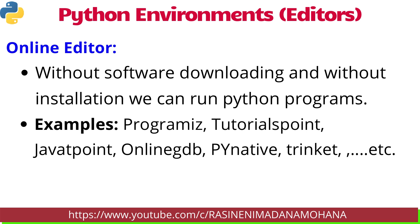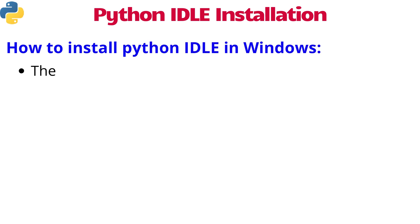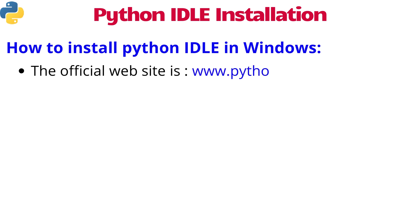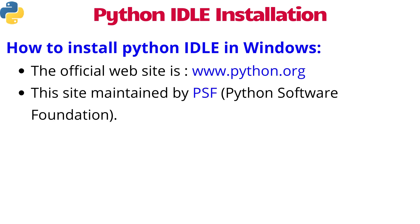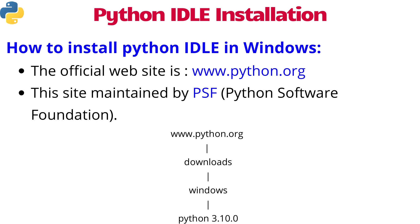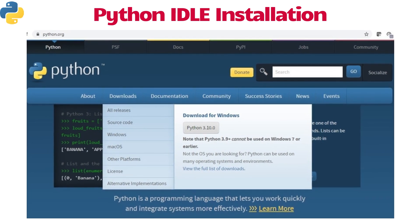Without installing any software, we can run Python programs on any of these environments. Coming to Python IDLE installation — how to install Python IDLE in Windows. The official website of Python is www.python.org, currently maintained by PSF — Python Software Foundation. The steps to download IDLE in Windows: first go to python.org, click on the Downloads menu, and choose the Windows version. The current version is 3.10.0.